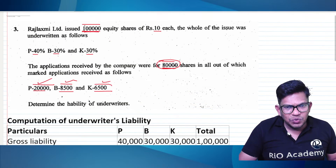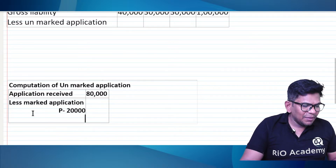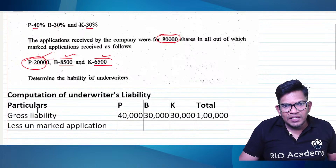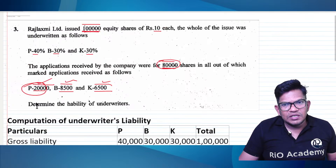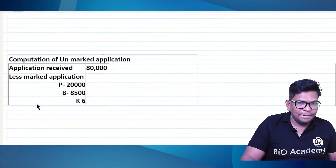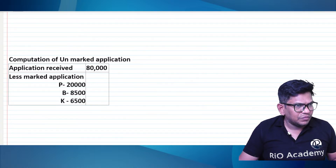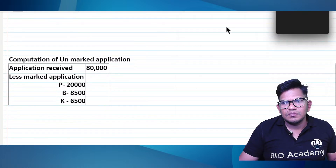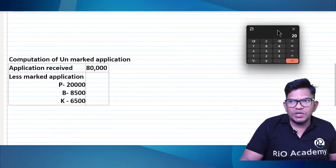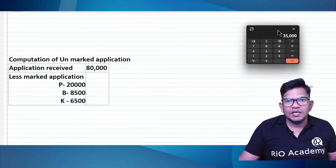Marked application for P is 20,000. For B it is 8,500. For K it is 6,500. Total marked applications: 20,000 plus 8,500 plus 6,500 equals 35,000.